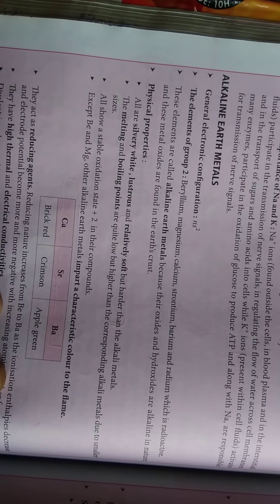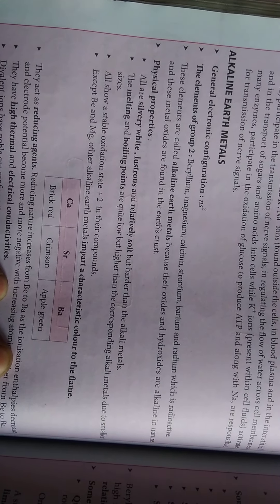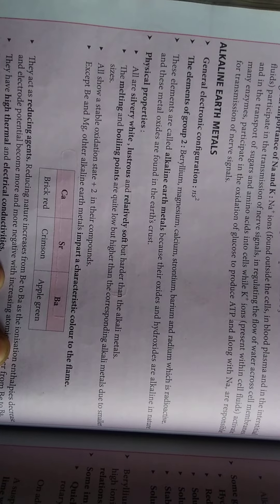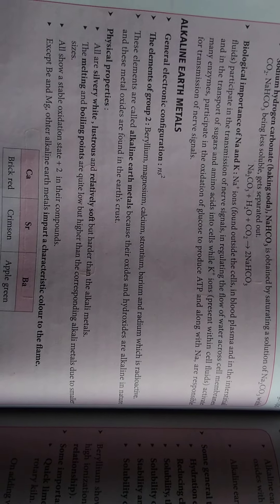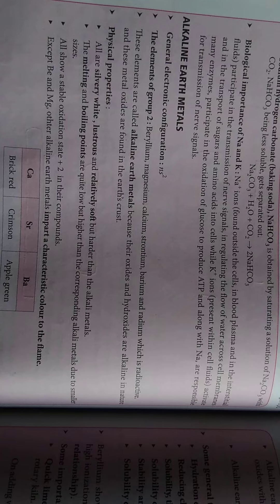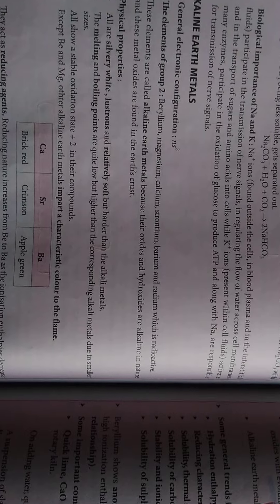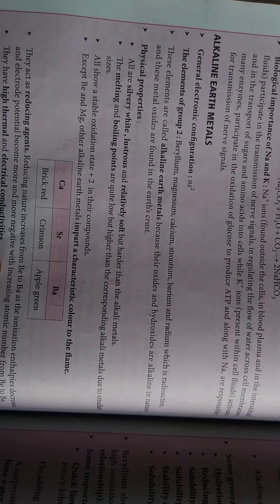The alkaline earth metals are Group 2 elements: beryllium, magnesium, calcium, strontium, barium, and radium — the last being radioactive. These elements are called alkaline earth metals because their oxides and hydroxides are alkaline in nature. These metals are found in the earth's crust.